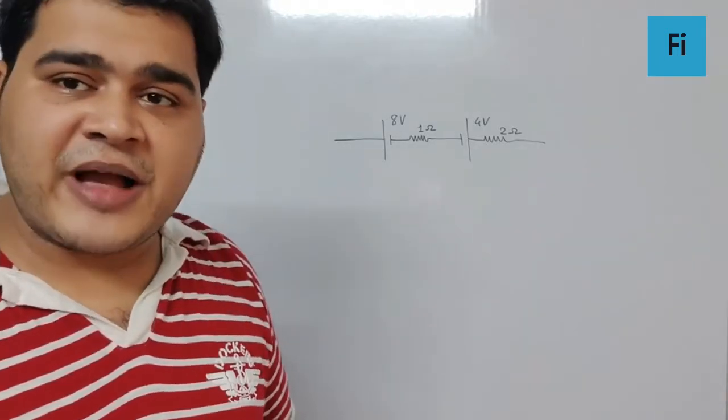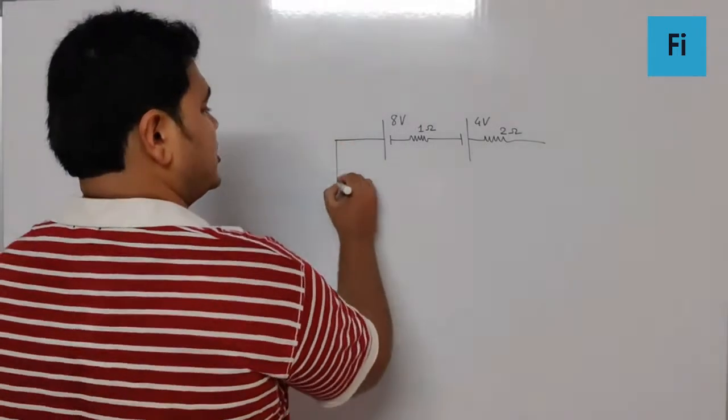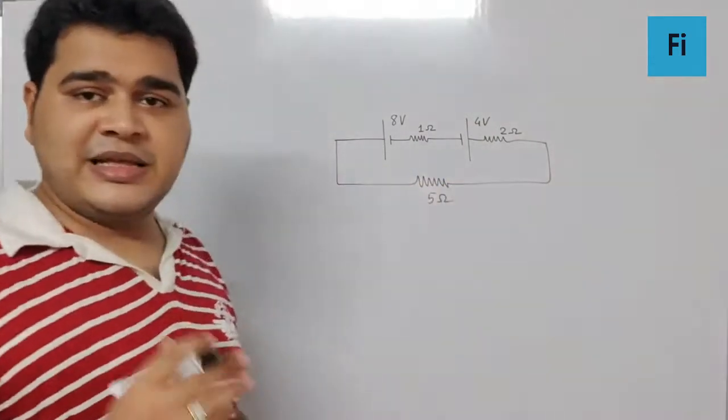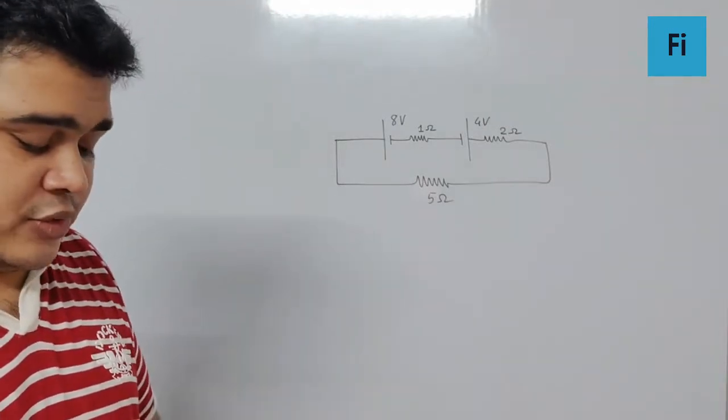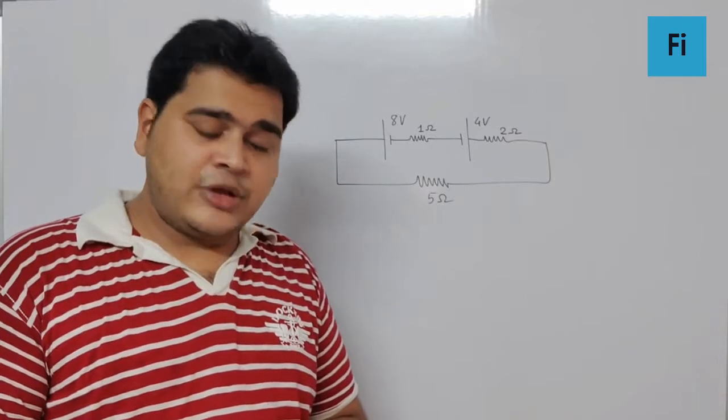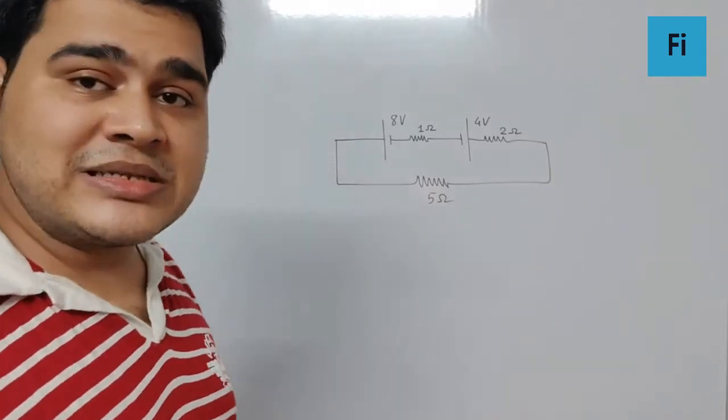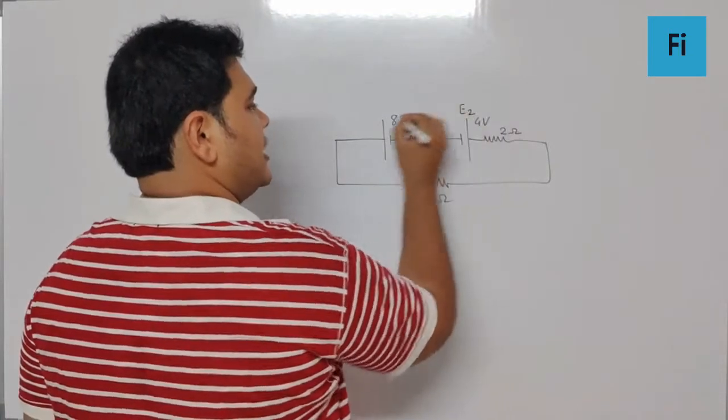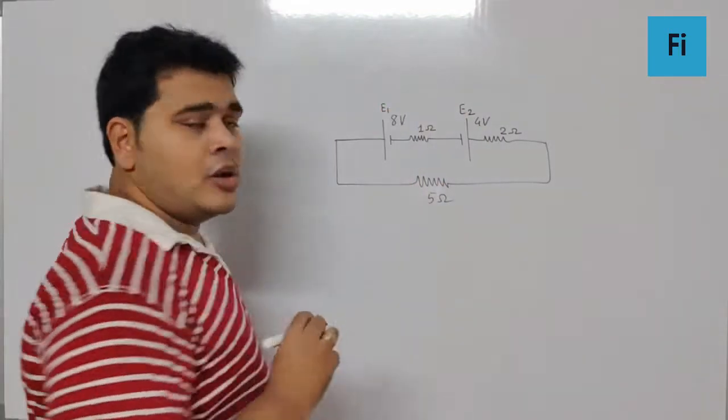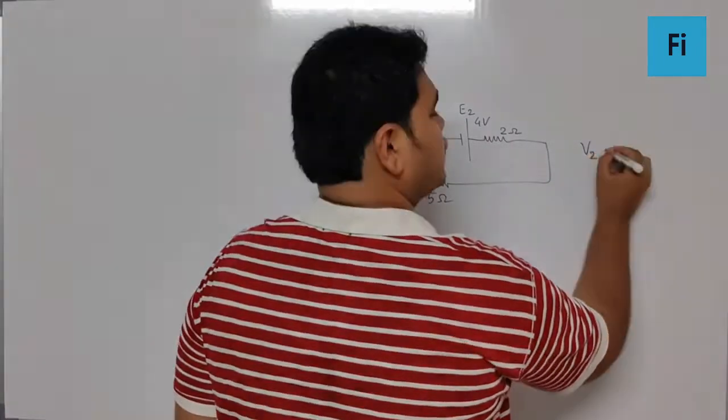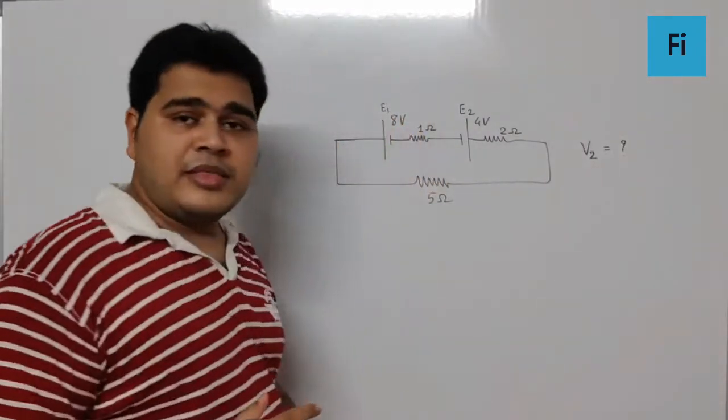So this is connected to 5 something like this. Now they are asking you the terminal potential difference across the cell E2. Yes, across the cell E2. This is the cell E2 and this is the cell E1. So basically they are asking us to find the value of V2.